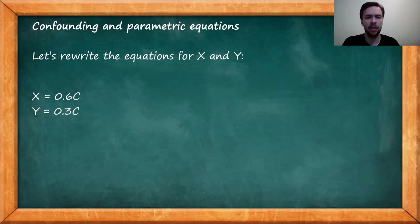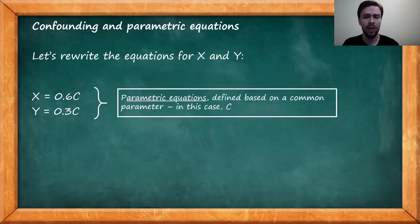So to start our argument, let's just rewrite the equations for X and Y. So X equals 0.6 times C and Y equals 0.3 times C. These are just the equations that we already discussed when presenting the data generating model. Here we can clearly see that X and Y are not functions of one another, but instead are both functions of a third common variable C. And in this situation, we can say that X and Y are a pair of parametric equations, because they are both based on a common parameter, in this case the variable C, which is our confounder.